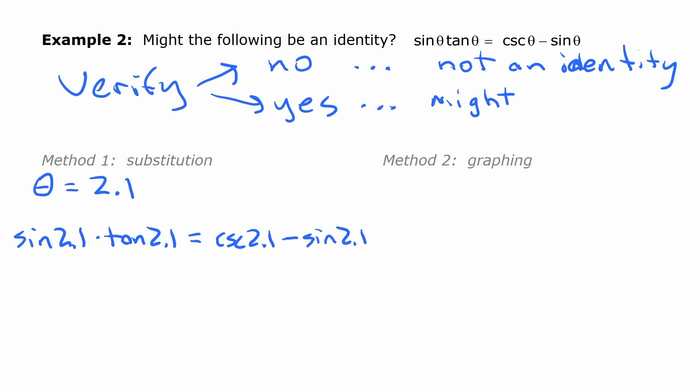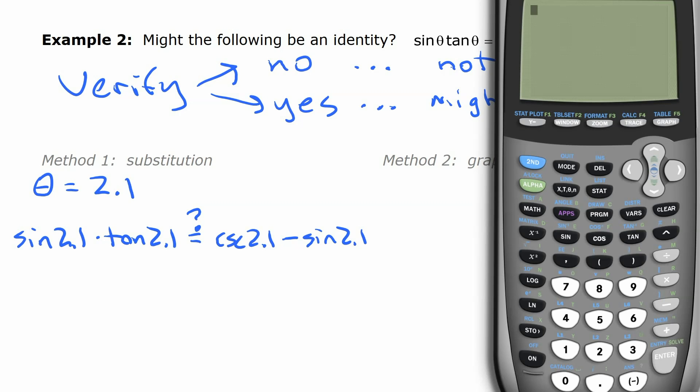Then we'll go to the calculator to work that out. I should probably put kind of a question mark above that equal sign because we don't know yet. That's what we're checking here, right? So go to the calculator. On our calculator here, then we're going to punch all of that in. Sine of 2.1 times tangent of 2.1. And we'll see what that value is. Negative 1.47 and so on. And the right side, we'll put that in. Now, there's no cosecant button on here. So then we need to subtract sine of 2.1. And we'll see what that value is.